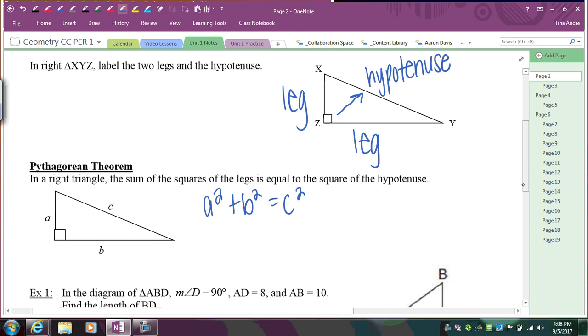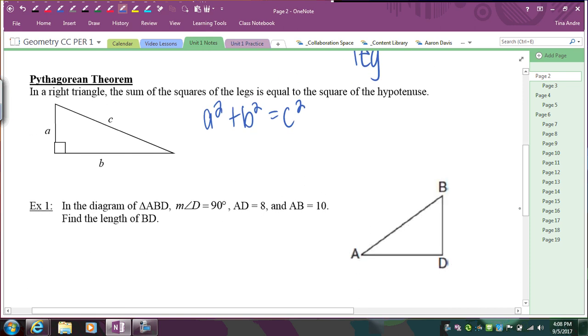So if we look at this first example, we have triangle ABD. The measure of angle D is 90, so that means I can put a 90 degree angle in here. The little M here stands for measure of angle D. AD, so the length between points A and D is 8. AB is 10. We're trying to find the length of BD. So that means I'm going to put an X there.